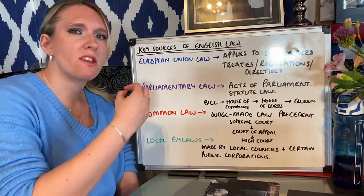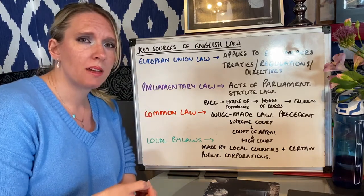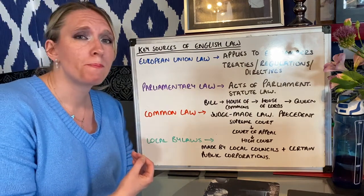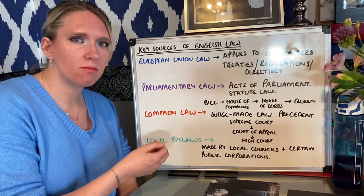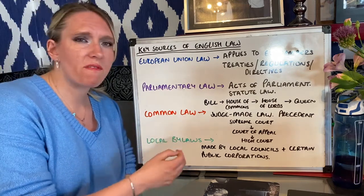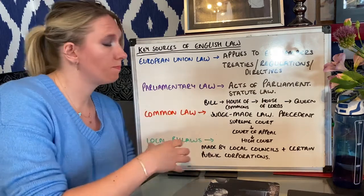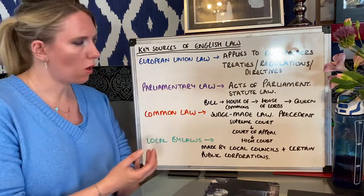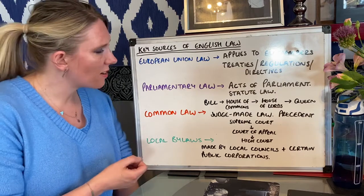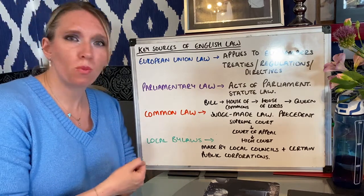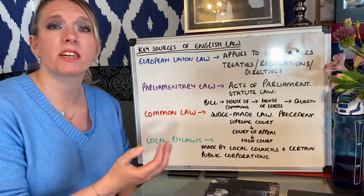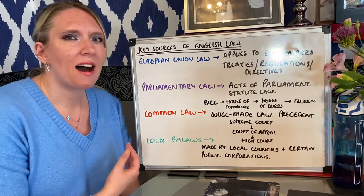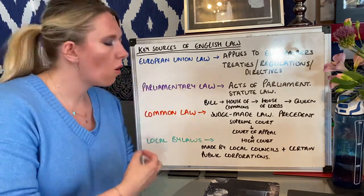Those are laws that are made by them for them. Up and down the country, you'll find that different towns and cities have different bylaws. For example, a seaside town such as Southfields will have a very different set of laws to a town that's inland, such as Nottingham. All of these different laws come together alongside others to create our English legal system. We don't have a single written constitution like America does — all of our laws are found in different sources and apply to criminal law, contract law, and tort law, amongst others.